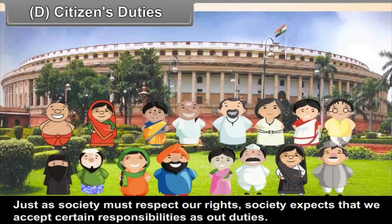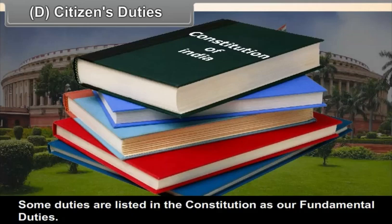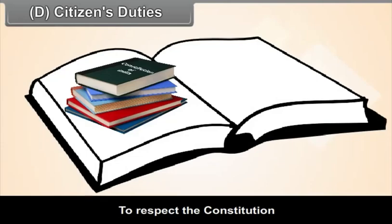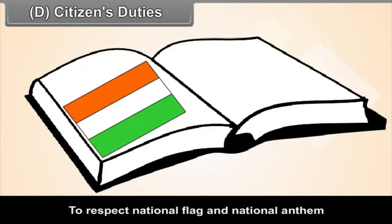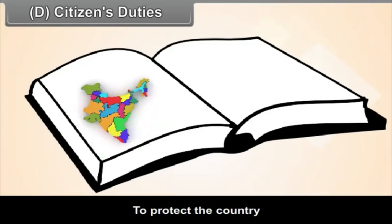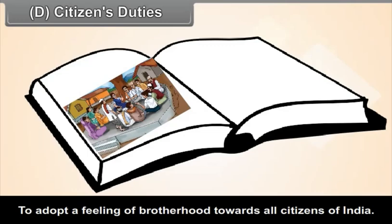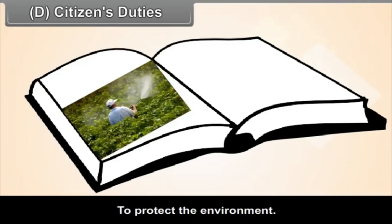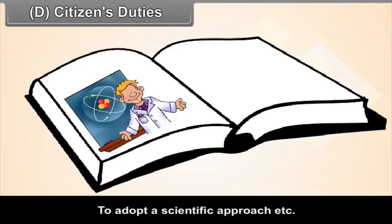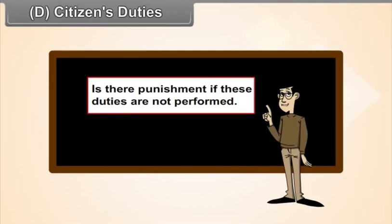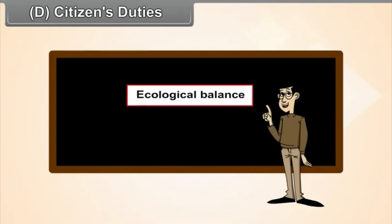Just as society must respect our rights, society expects that we accept certain responsibilities as our duties. Some duties are listed in the Constitution as fundamental duties. These include: to respect the Constitution, to respect the national flag and national anthem, to protect the country, to adopt a feeling of brotherhood towards all citizens of India, to protect the environment, and to adopt a scientific approach. Is there punishment if these duties are not performed?